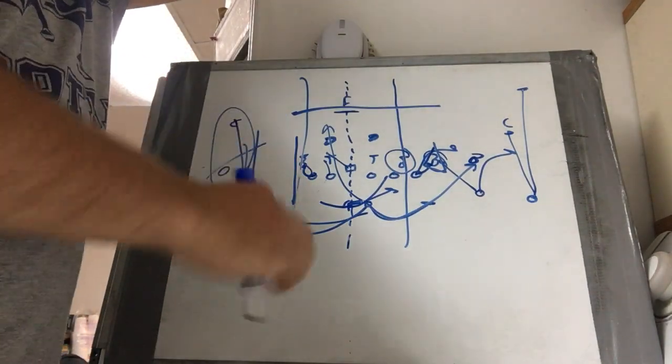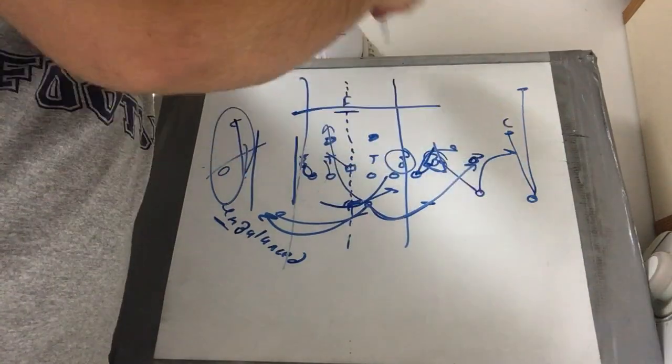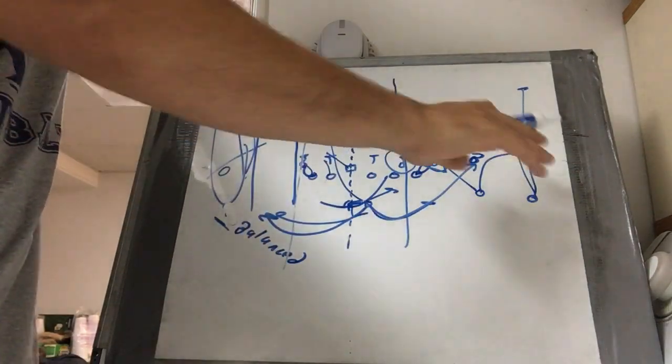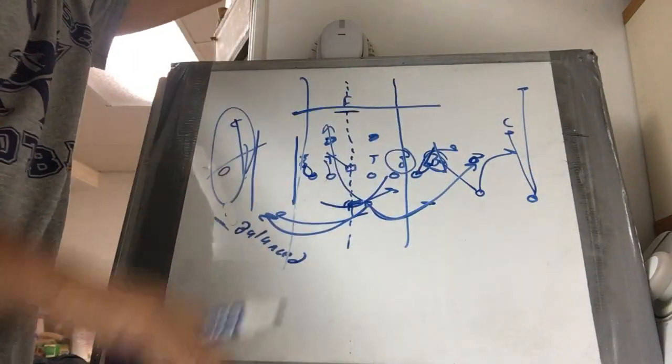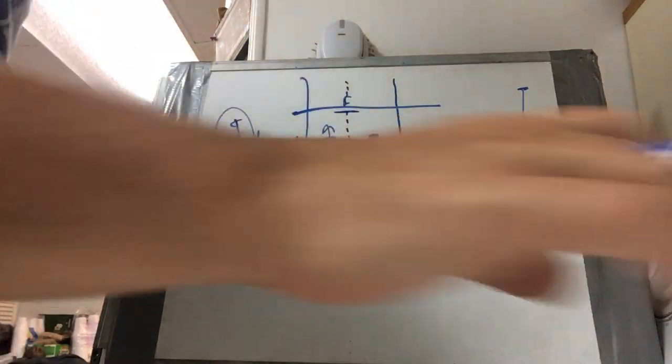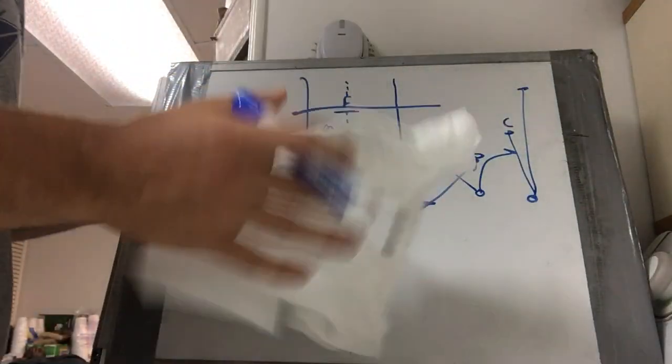So, again, they're in cover three, and they're going to play you balanced. You go trips, you try to outnumber them. They bring a guy over, we're just going to keep hitting them weak. That's how you attack one high safety or a balanced defense.